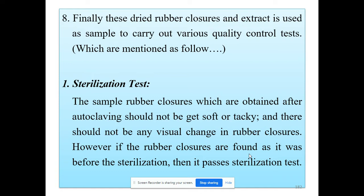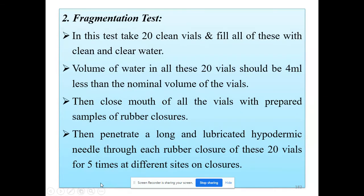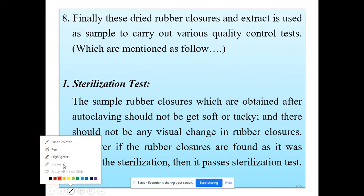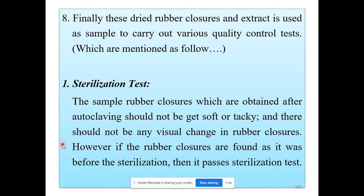Today we are going to study the different types of quality control tests which we perform on the samples of rubber closures and on the aqueous extract of the rubber closer. The first quality control test is the sterilization test.